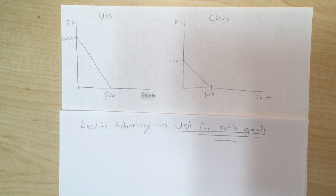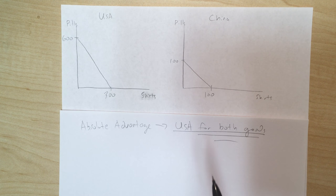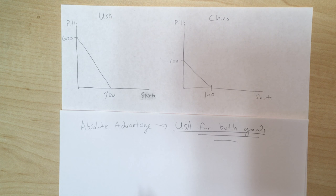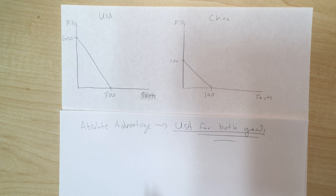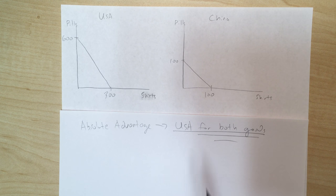This is really the most important lesson here, maybe the most important lesson from all of economics. The tempting thing is to look at this and say: if the US has the absolute advantage in both goods, they have no reason to trade with China. It's like saying I'm better at both history and math problems, so there's no way for me to benefit from trading with other students. But that's completely wrong — absolute advantage does not determine trade, comparative advantage does.